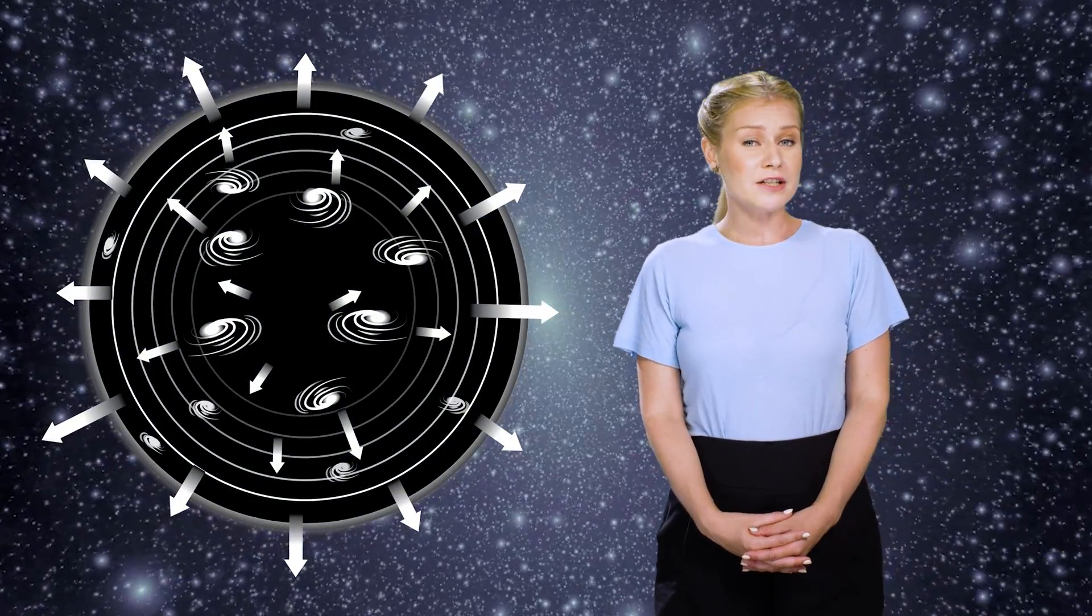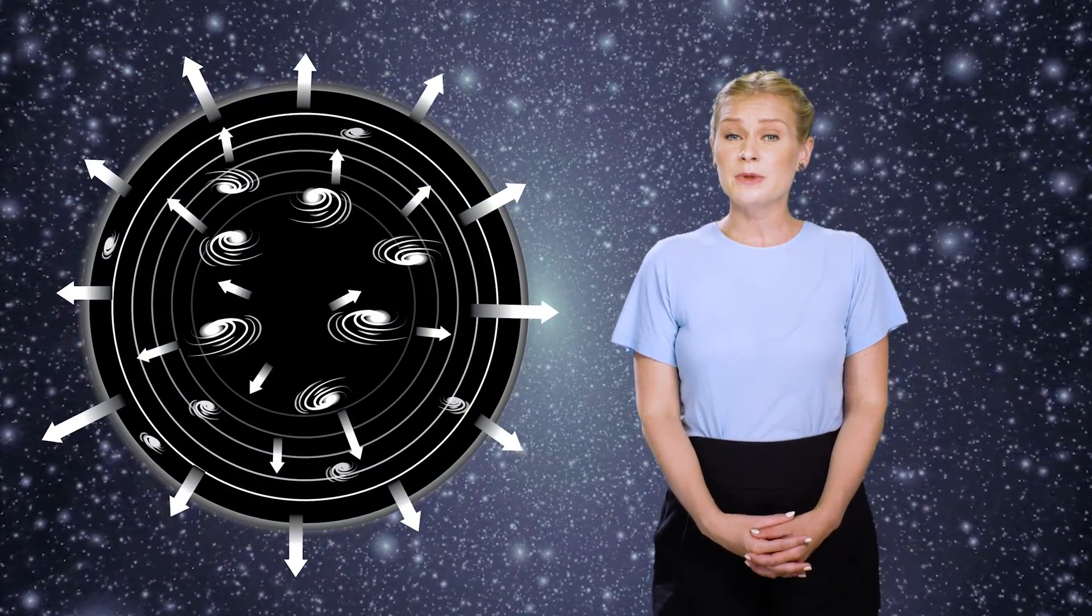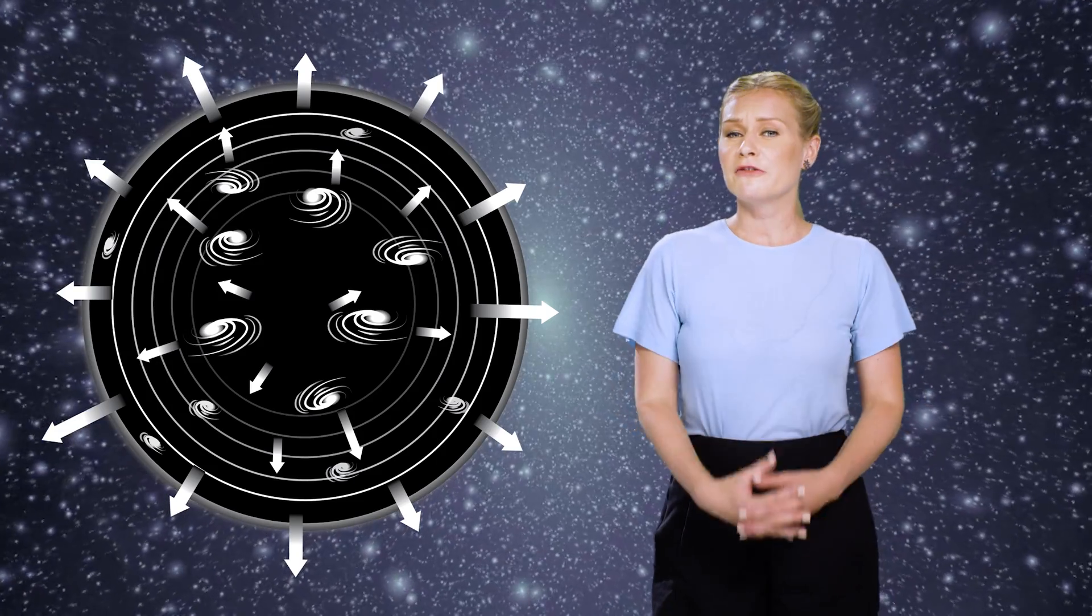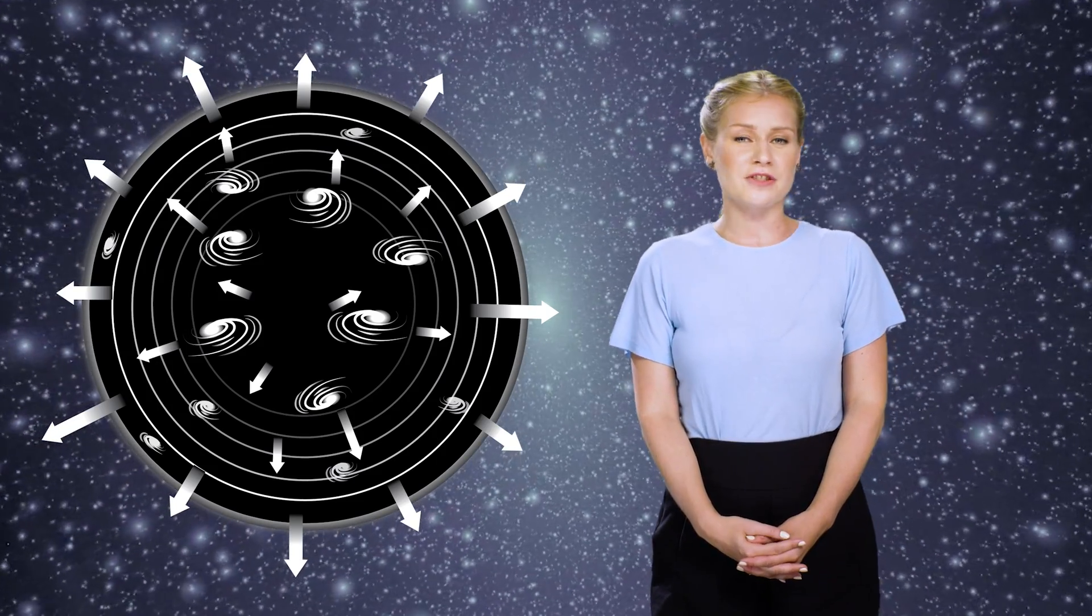In the early 1900s, it was discovered that all galaxies beyond a certain distance from us appeared to be moving away from us, and that the farther away they were, the faster they moved. This is called Hubble's Law.